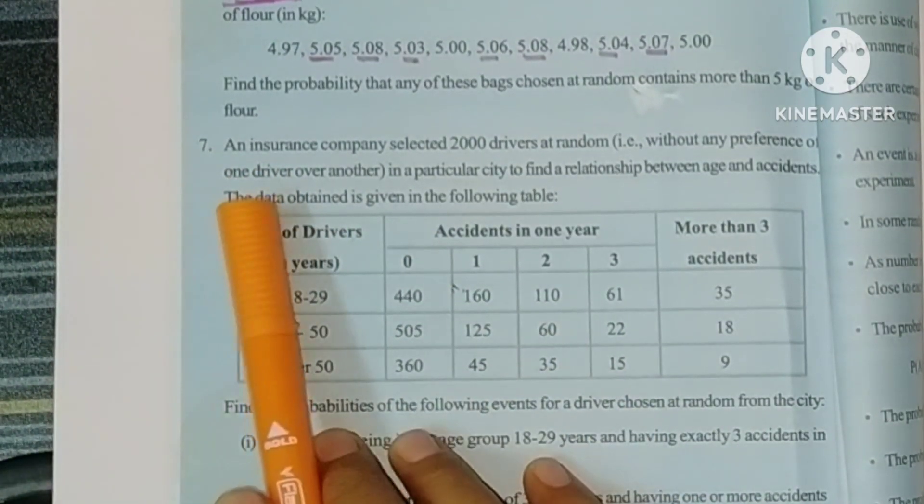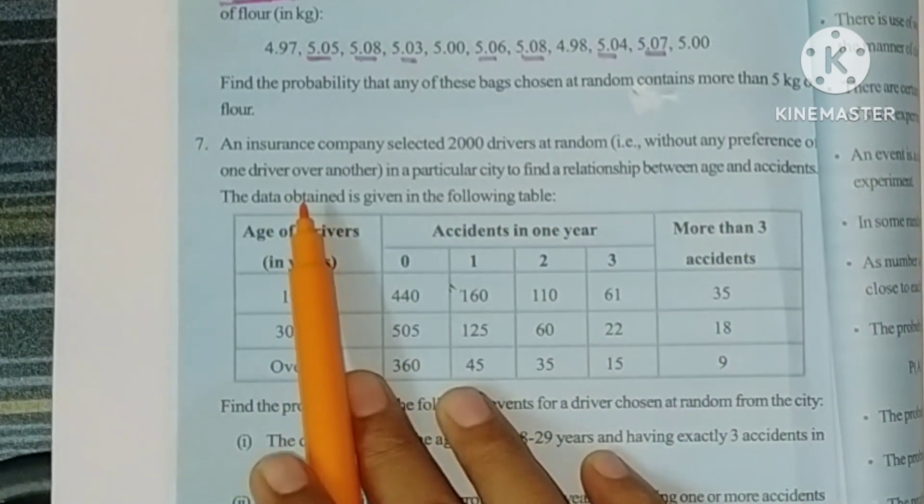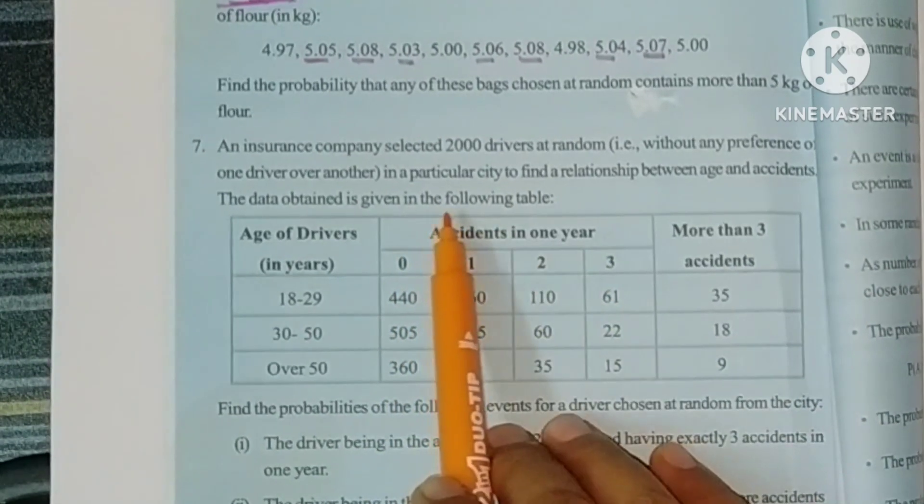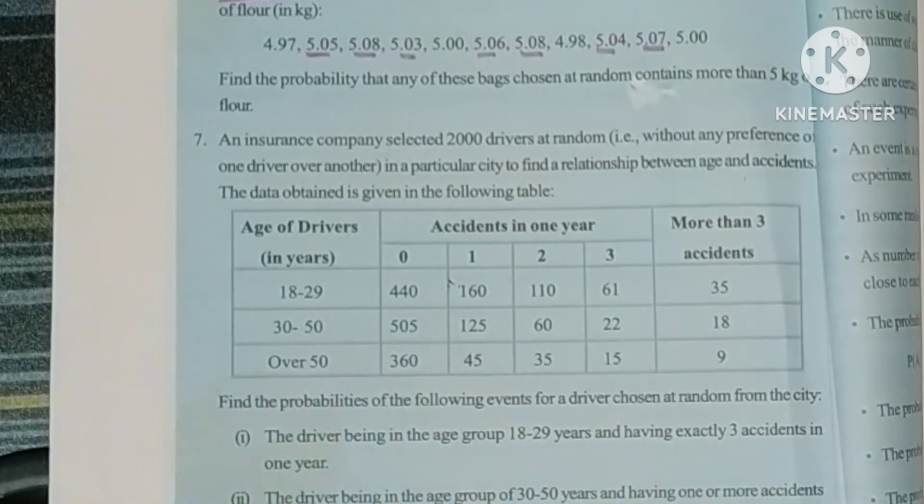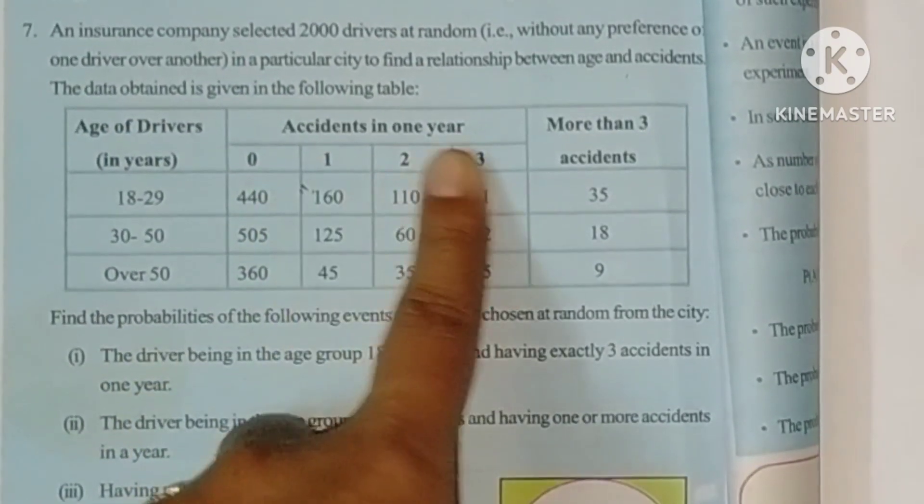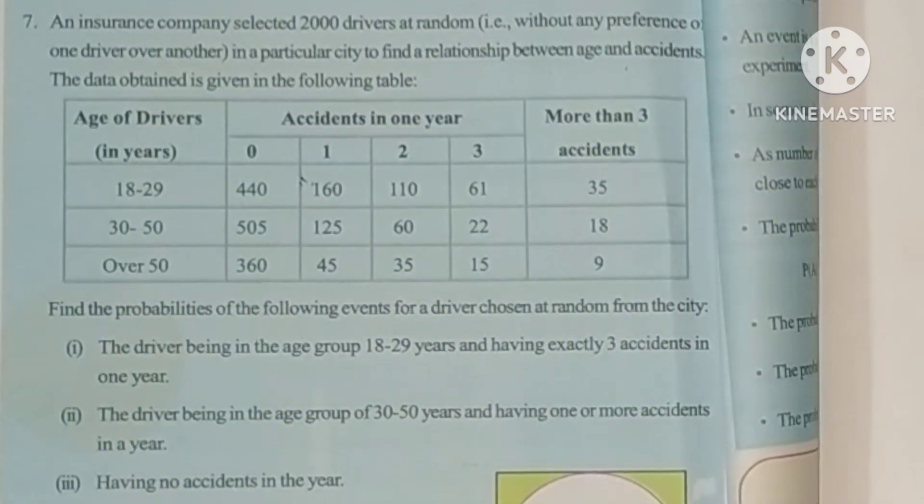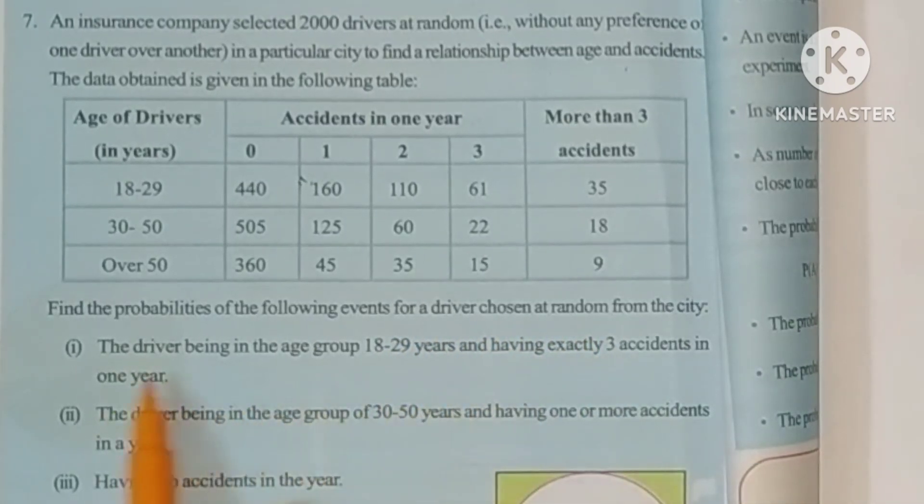Next problem, seventh one. An insurance company selected 2000 drivers at random without any preference in a particular city to find a relationship between age and accidents. The data obtained is given in the following table. This is age group of drivers and accidents in one year: one accident, two accidents, three and more than three accidents. Find the probability of the following events for a driver chosen at random from the city.